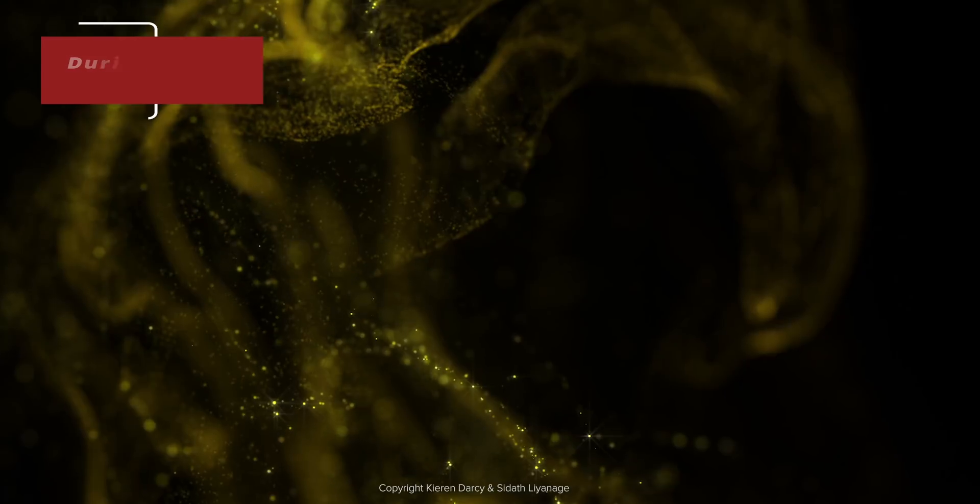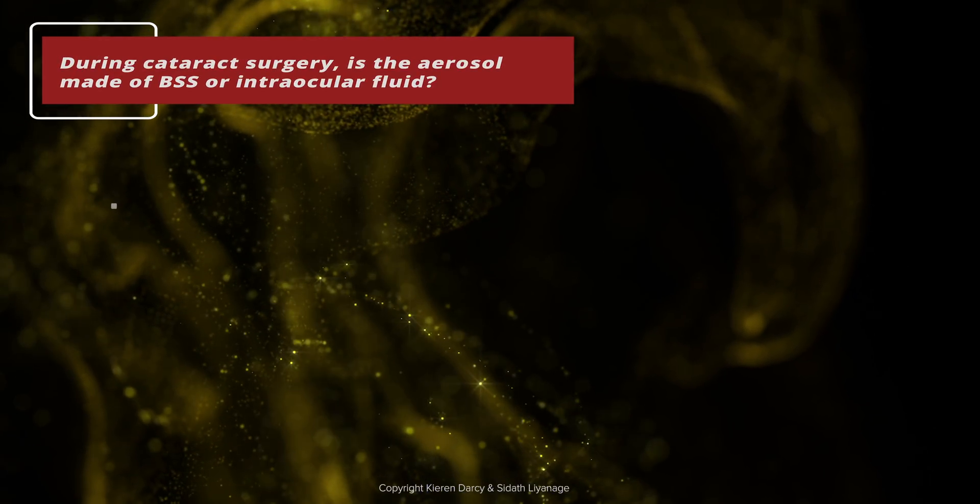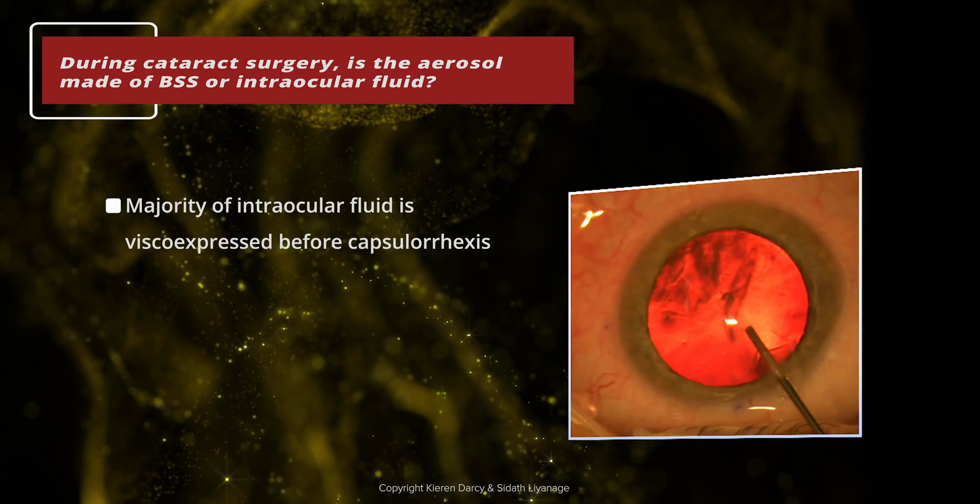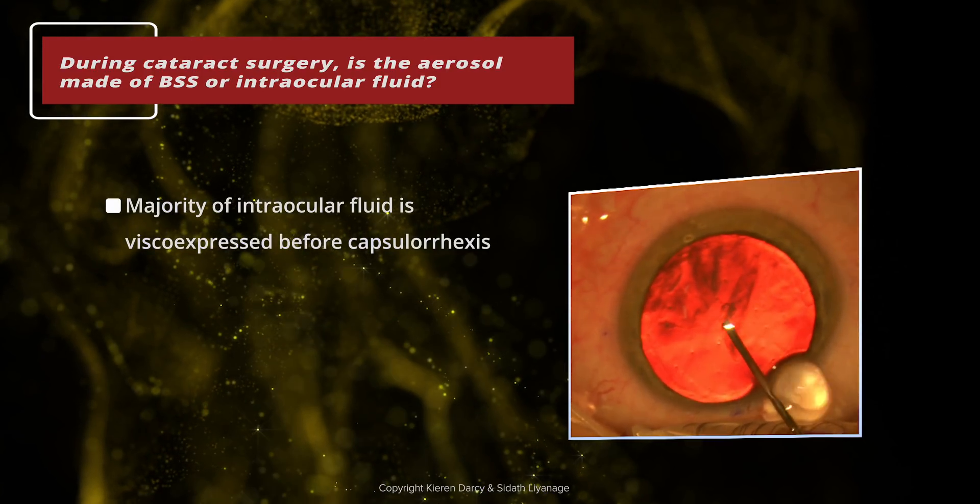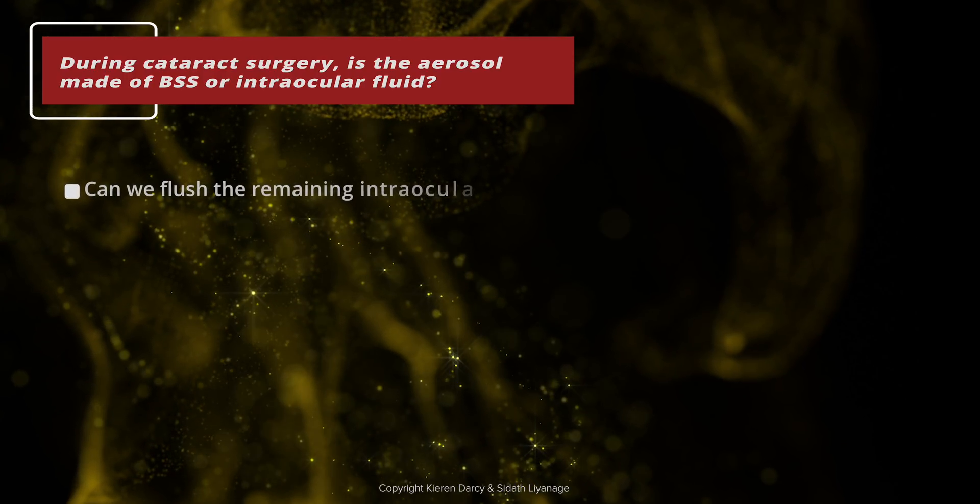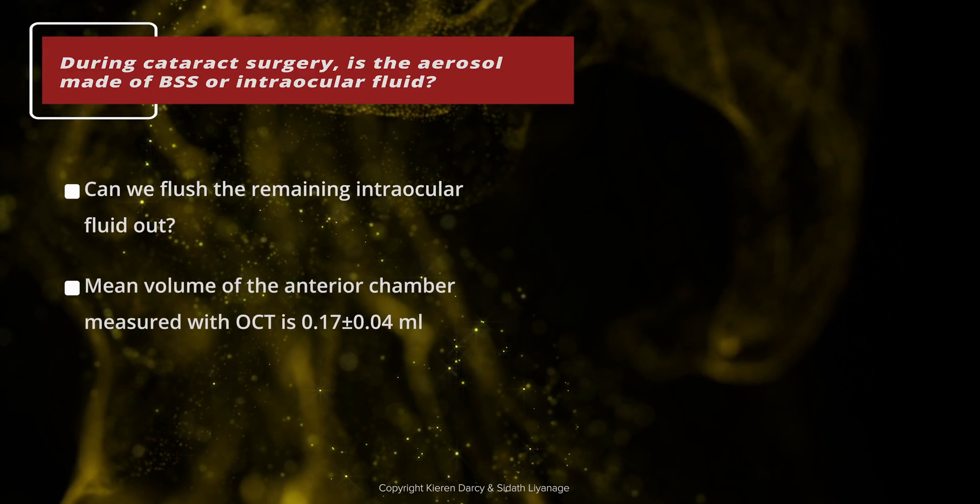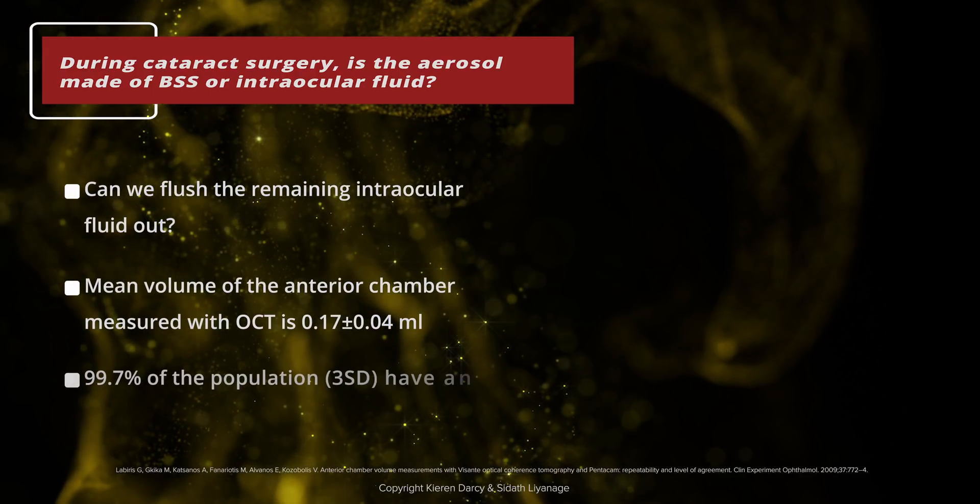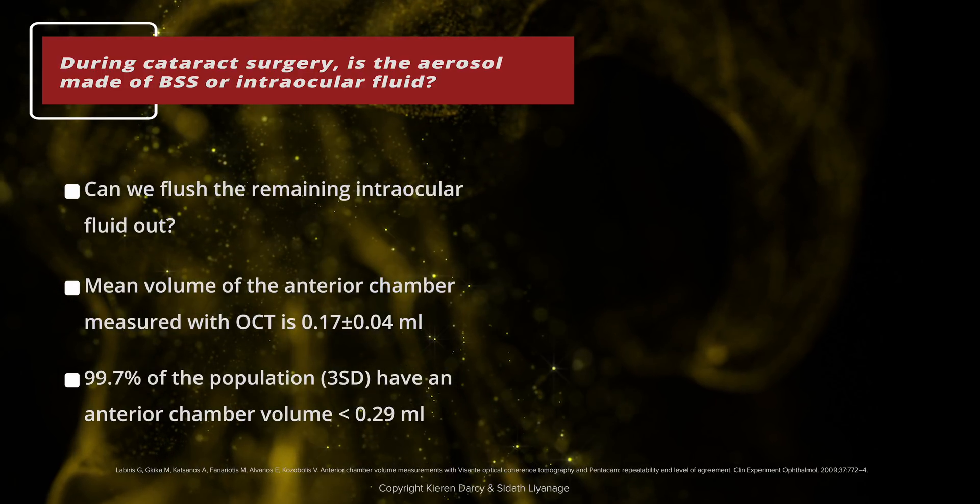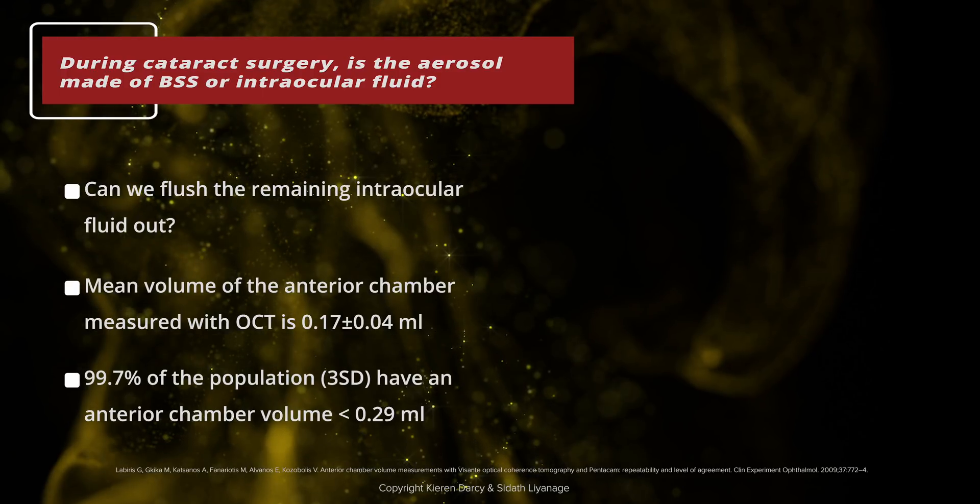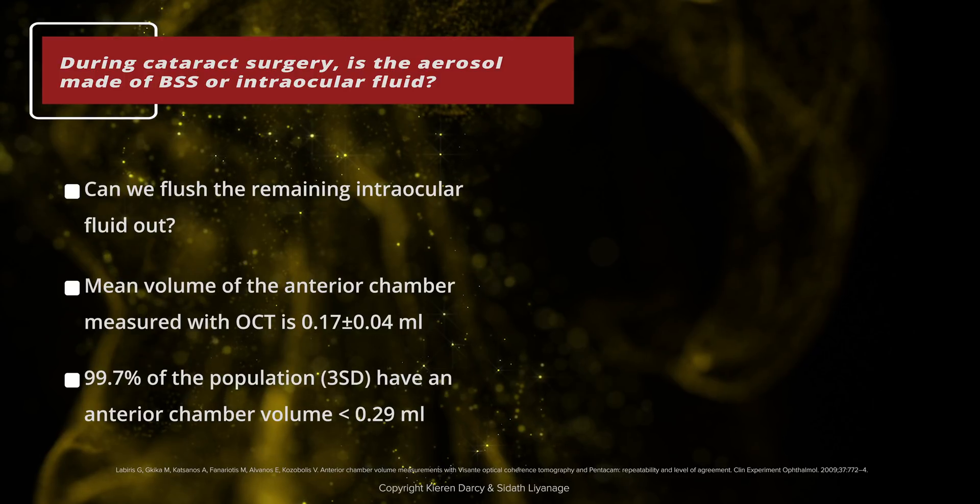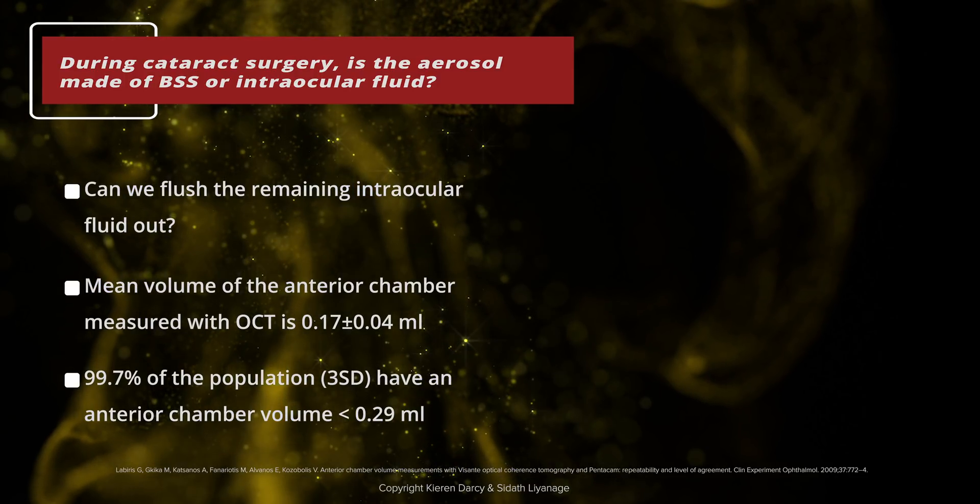The next pertinent question in order to stratify the risk of aerosol is, during cataract surgery, is the aerosol made of BSS or intraocular fluid? The majority of intraocular fluid is visco-expressed before capsulorhexis. After this step, it is possible to reliably flush out the remaining aqueous humour. OCT studies demonstrate in humans, the average volume of the anterior chamber is 0.17 mils, with a standard deviation of 0.04 mils. Therefore, 99.7% of the population will have an anterior chamber volume of less than 0.29 mils.